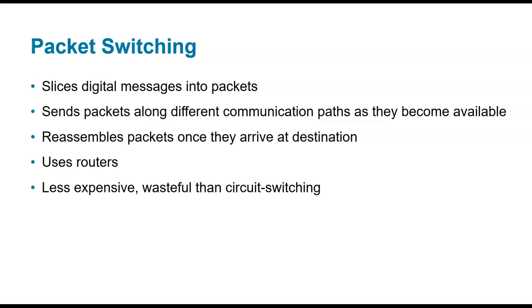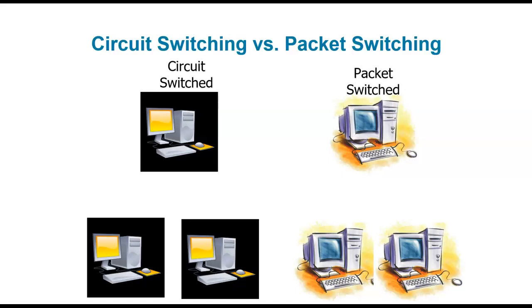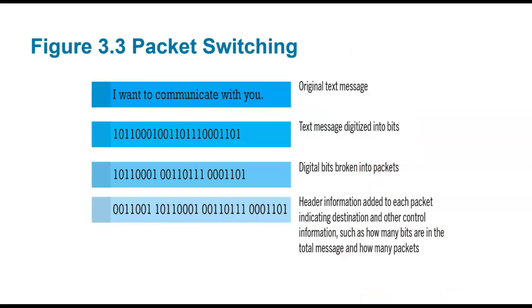Not all information on the internet takes the same route to get where it ends up, which is why we use routers. When communicating, we break our communications down into smaller chunks, spread them out over multiple pathways, and reassemble them in the right order on the other end. In a traditional circuit-switched world, one computer could only talk to another at any given time. In a packet-switched environment, pieces of information move in and around each other simultaneously.